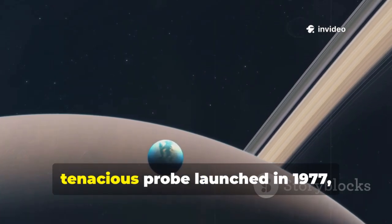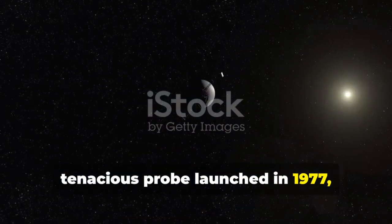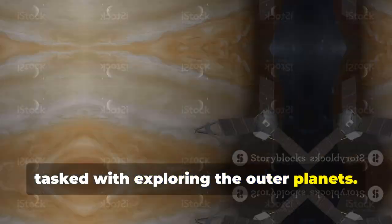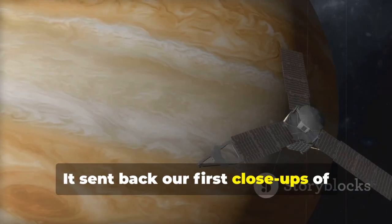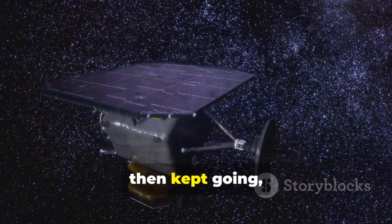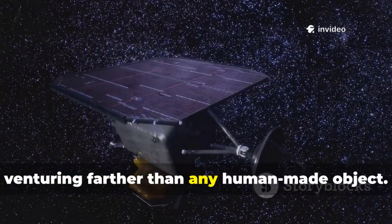Picture Voyager 1, a tiny tenacious probe launched in 1977, tasked with exploring the outer planets. It sent back our first close-ups of Jupiter and Saturn, then kept going, venturing farther than any human-made object.